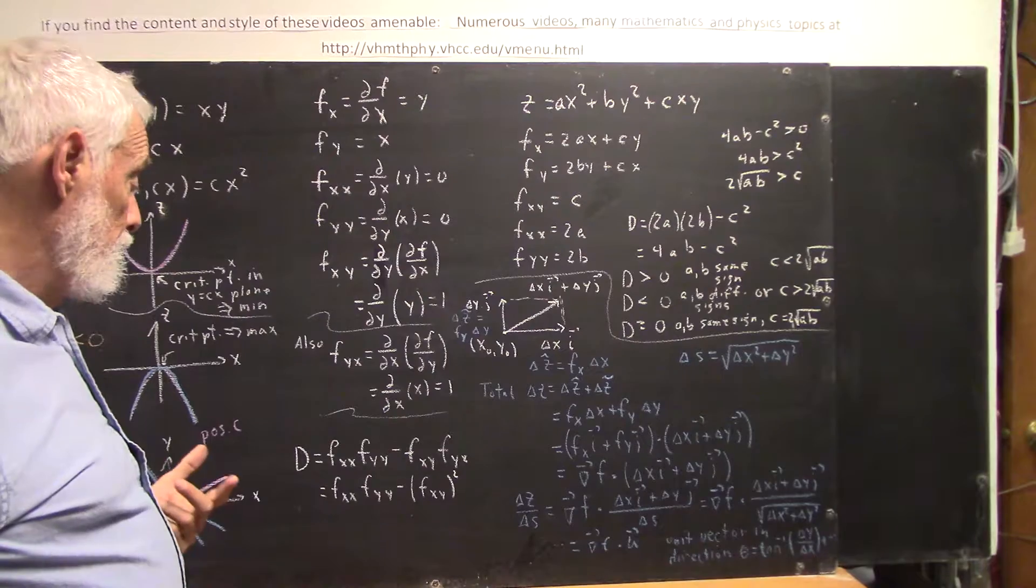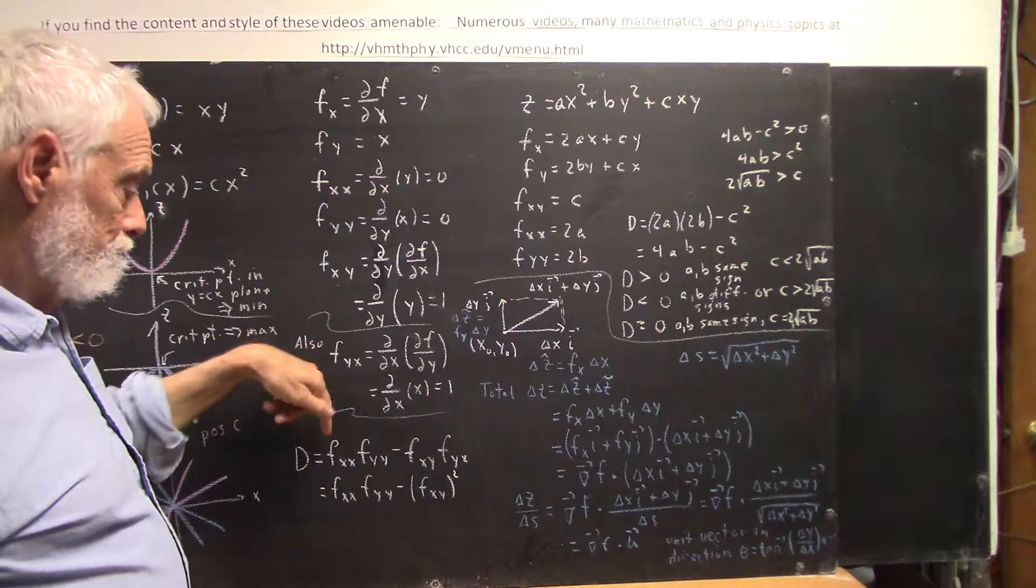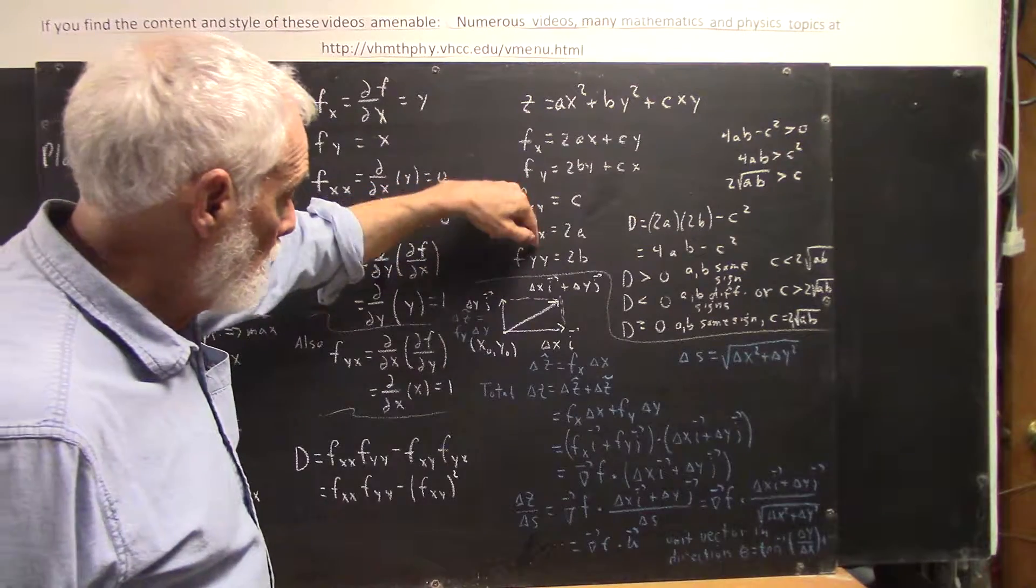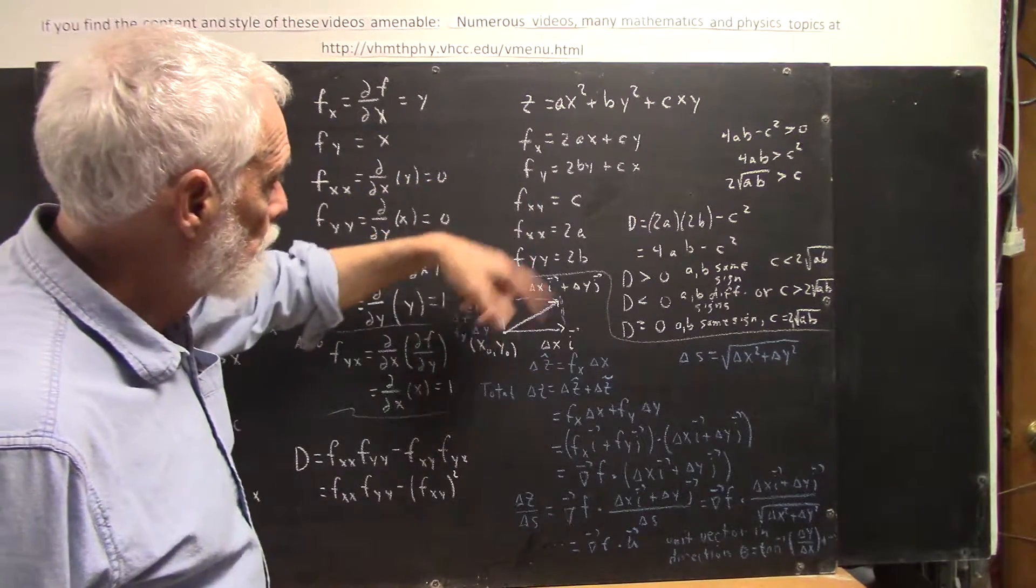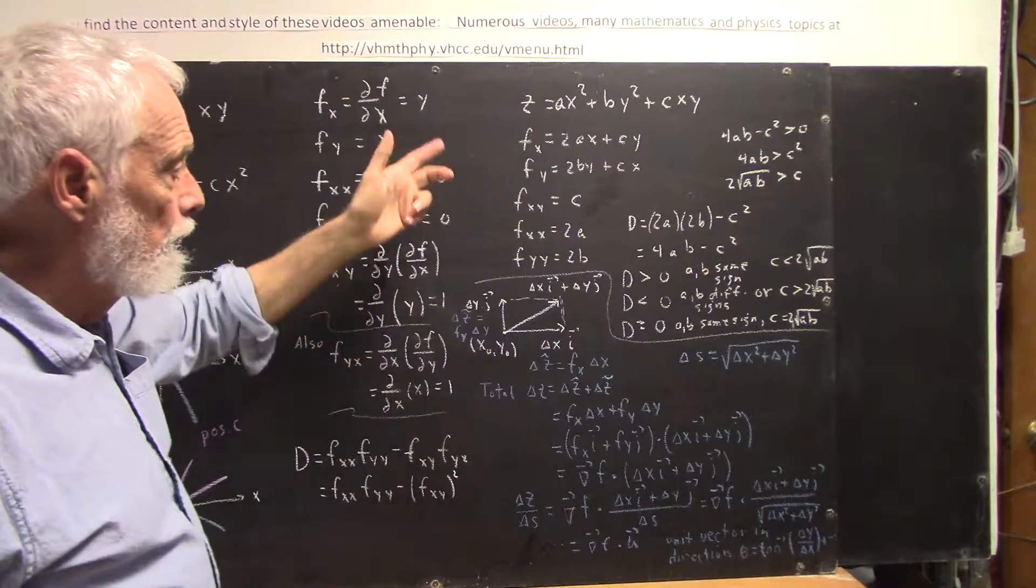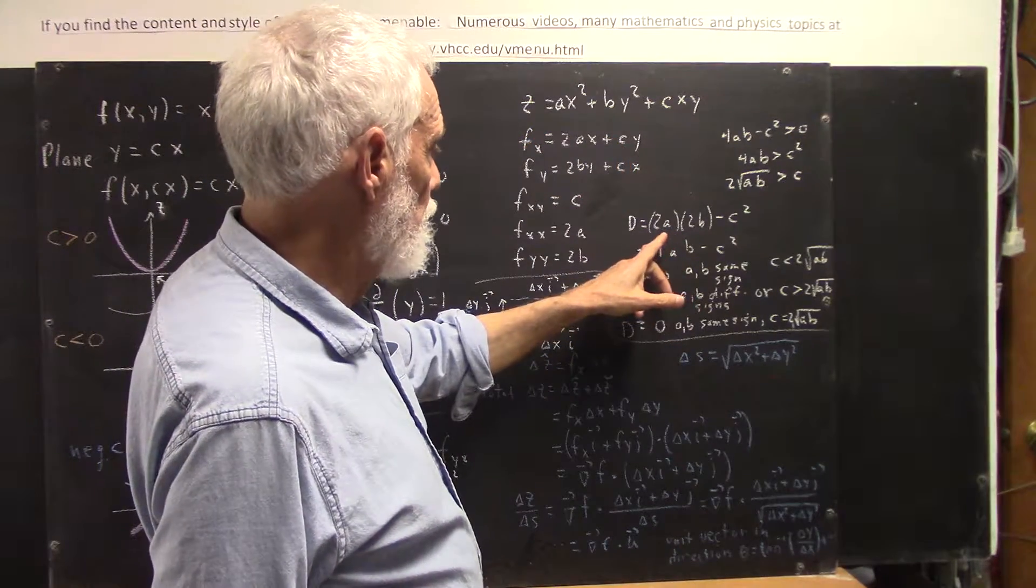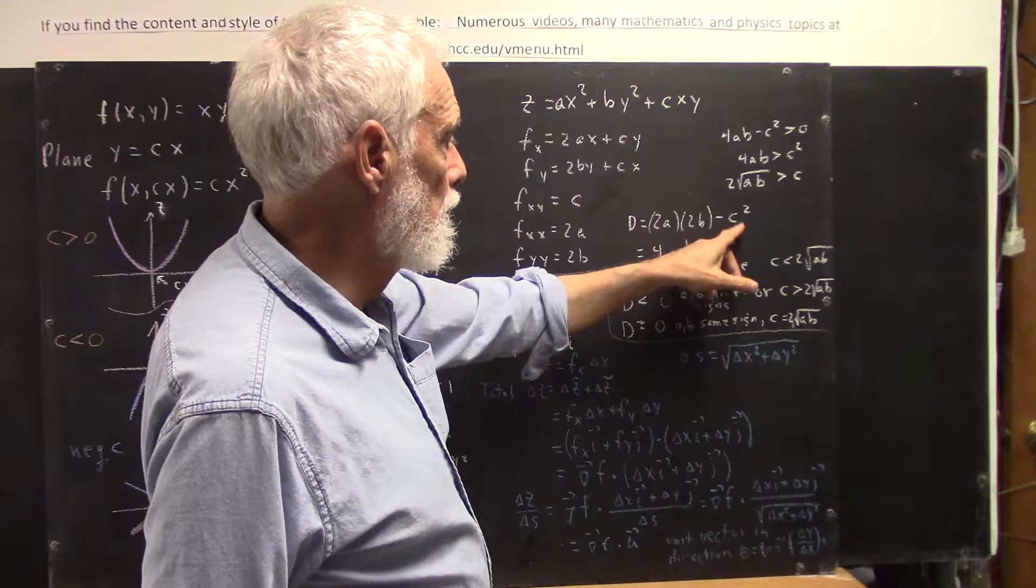Well, the test, if we just plug the xx-derivative in here, the yy-derivative in here, and the xy-derivative here, this d quantity is then going to be 2a times 2b minus c squared.